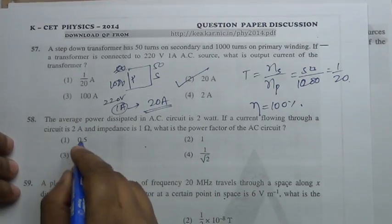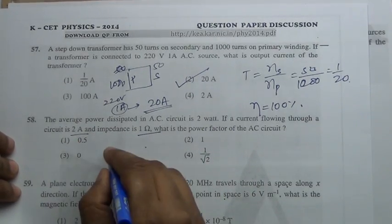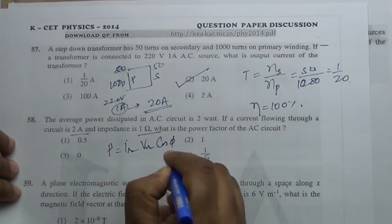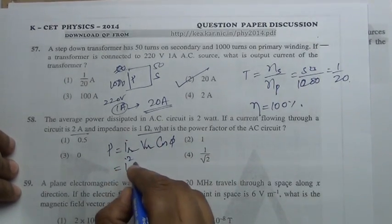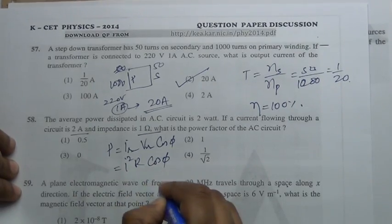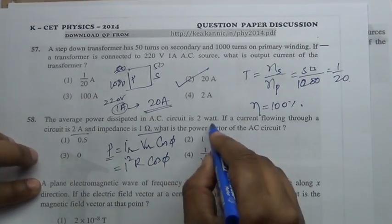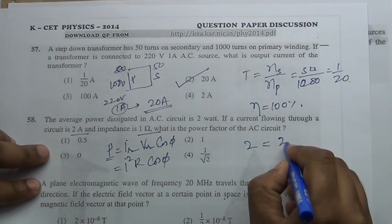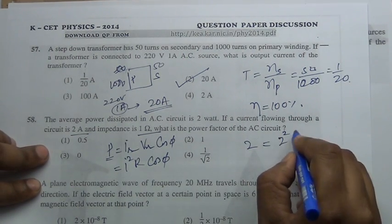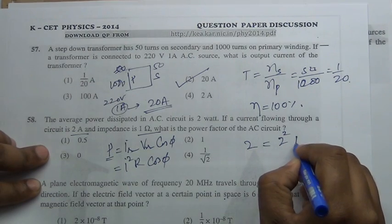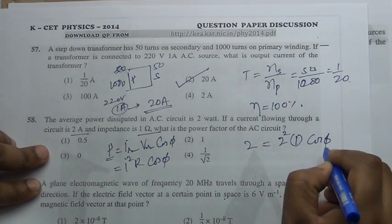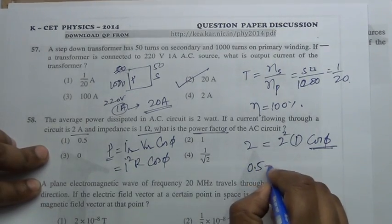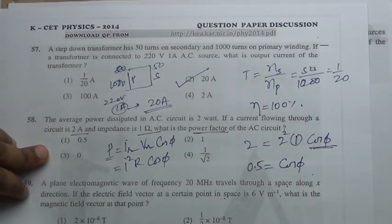The average power dissipated in an AC circuit is 2 W with a current of 2 A flowing through a resistance of 1 Ω. Using P = I²_rms · R · cosφ: 2 = (2)² × 1 × cosφ = 4·cosφ. Therefore the power factor cosφ = 0.5.